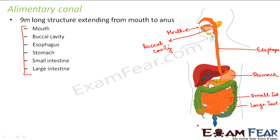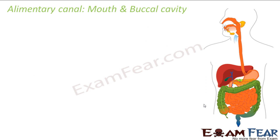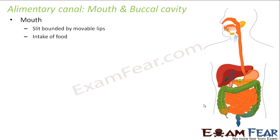We will now study how holozoic nutrition or the process of digestion occurs in each of these organs, and what the function of each organ is. Let us start with the mouth and the buccal cavity. The mouth is a slit bounded by movable lips — that is why we are able to speak and take in food. Mouth helps in the intake of food, meaning ingestion happens through the mouth.